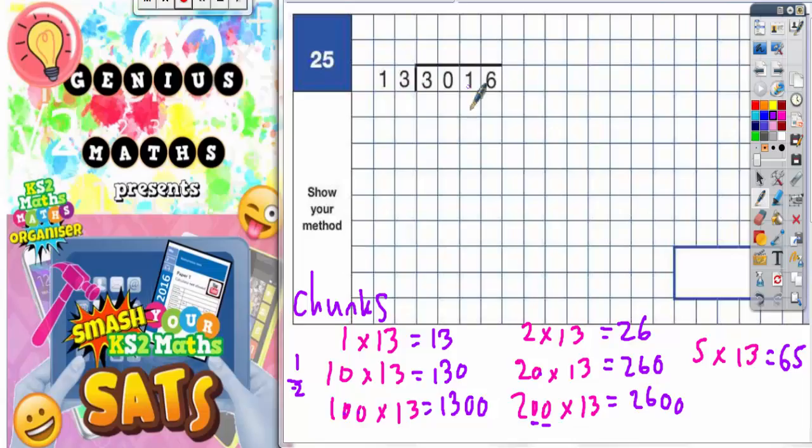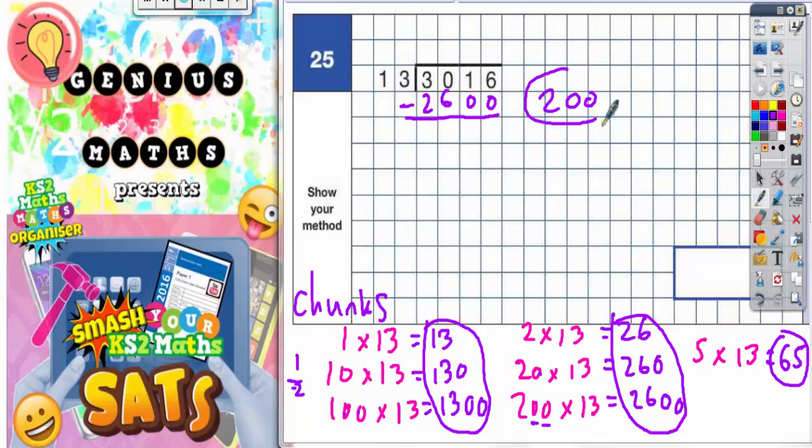Now what we've got to do next is find the biggest number out of these chunks. These are our chunks to choose from, to subtract from 3,016. So the biggest number I can take away is 2,600. We're going to take away 2,600. You can't just take it away, you must say what chunk of 13 that is. Well that's a chunk of 200×13. We're going to write 200 at the side, so I need to add up my chunks right at the end, and we need that 200 later.